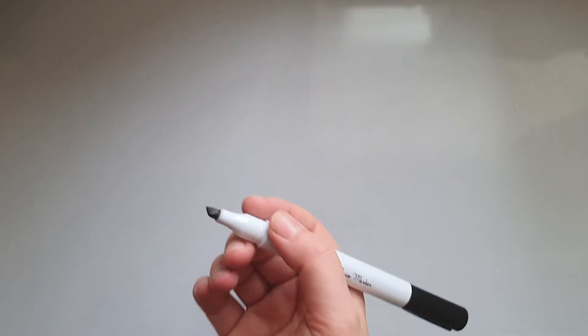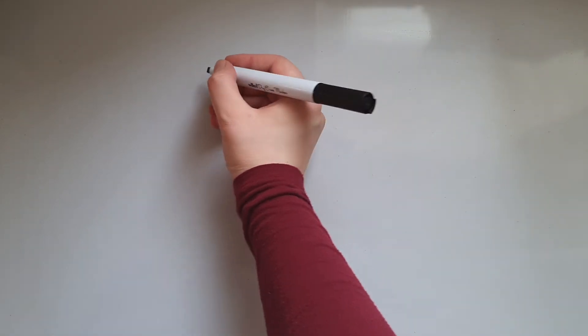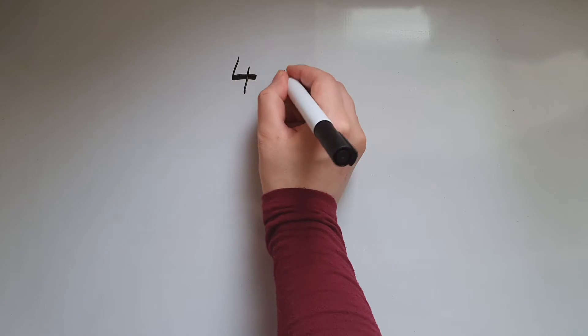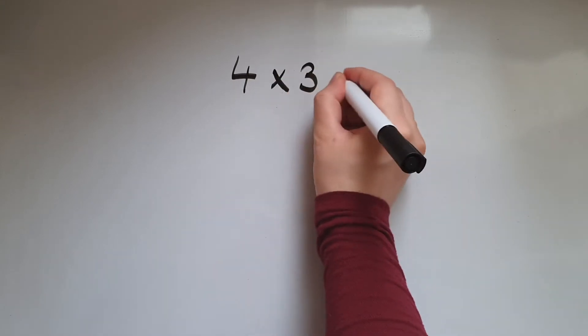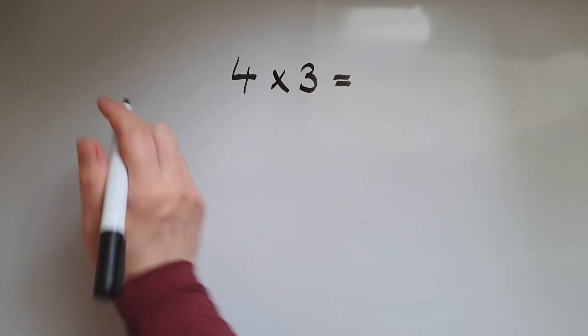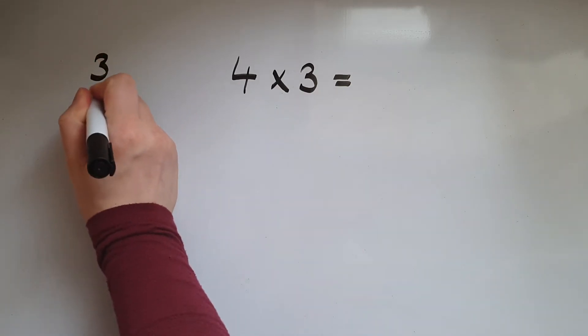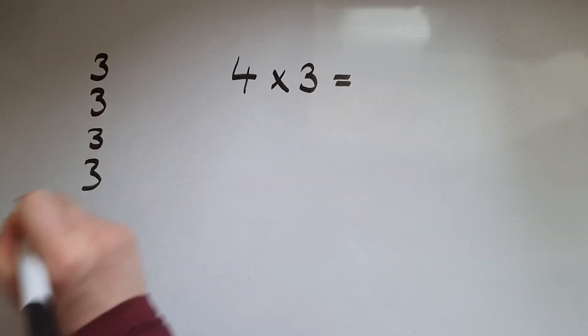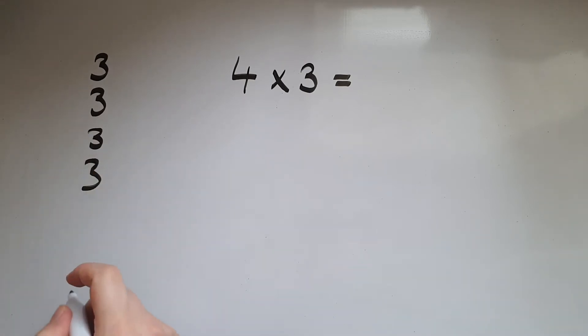When we get four times three, it means four lots of three. So we'd have three and three and three and three, so four lots of them.